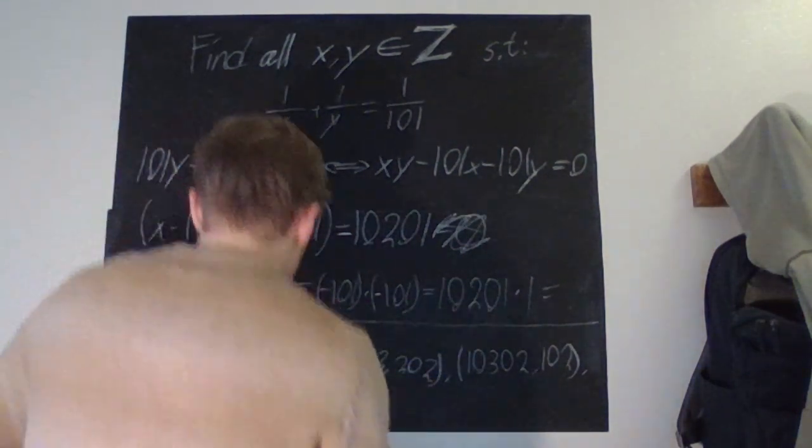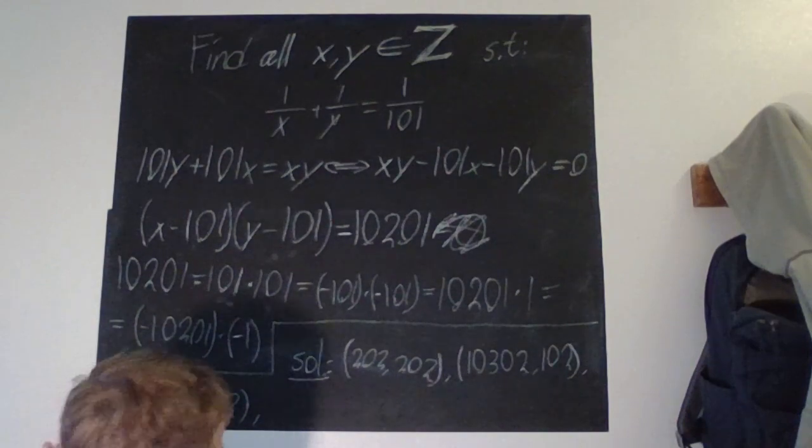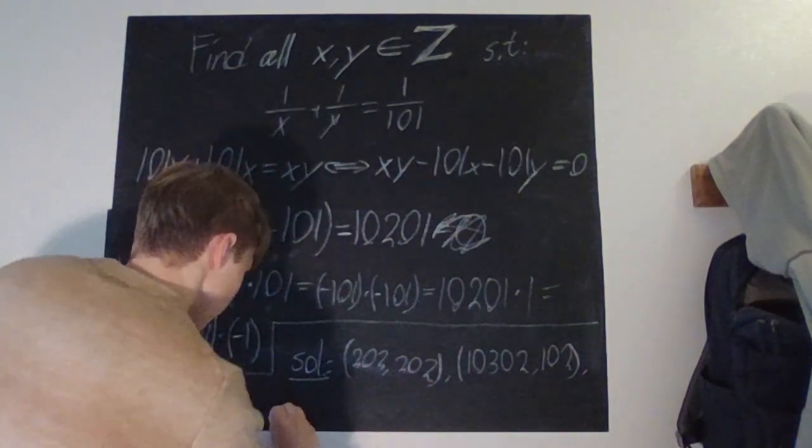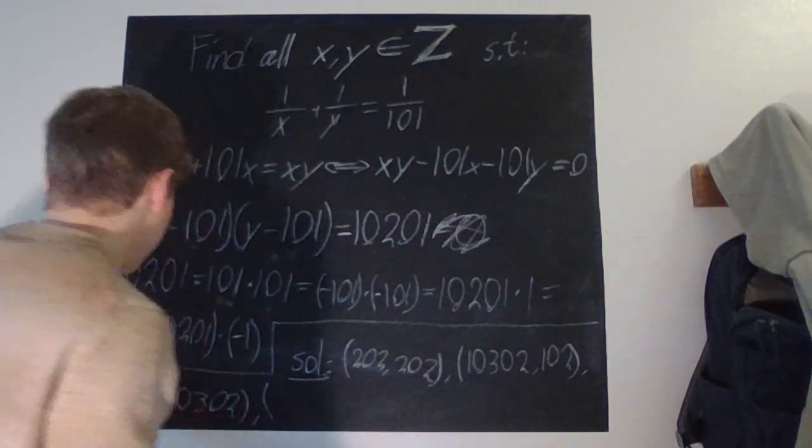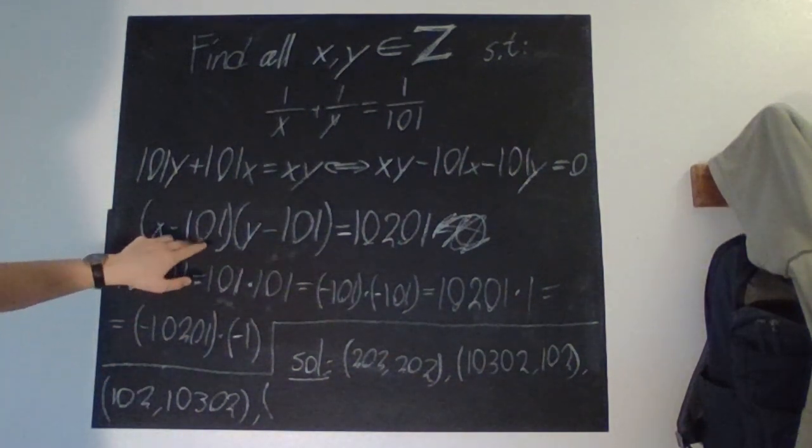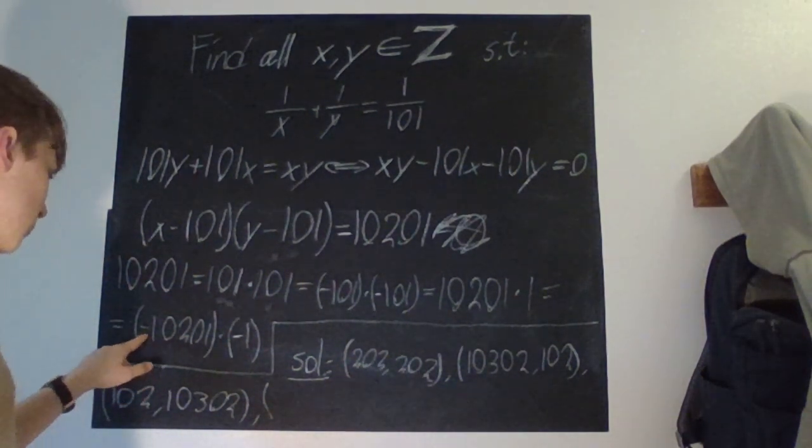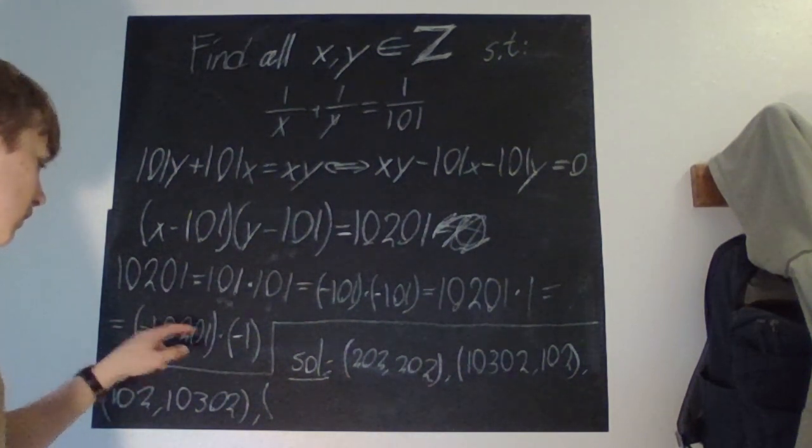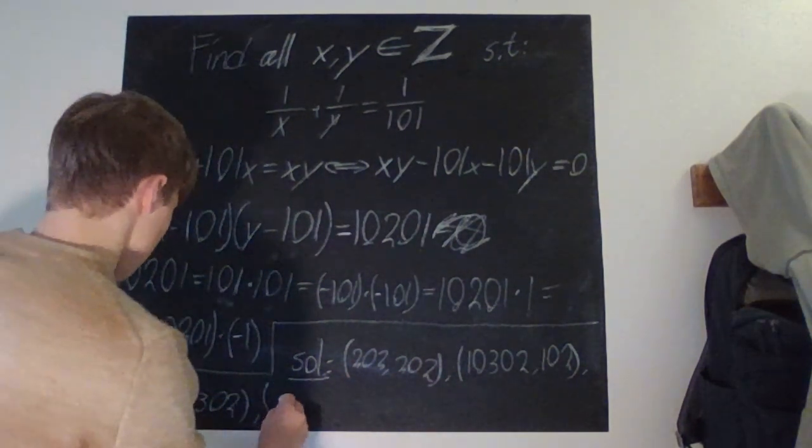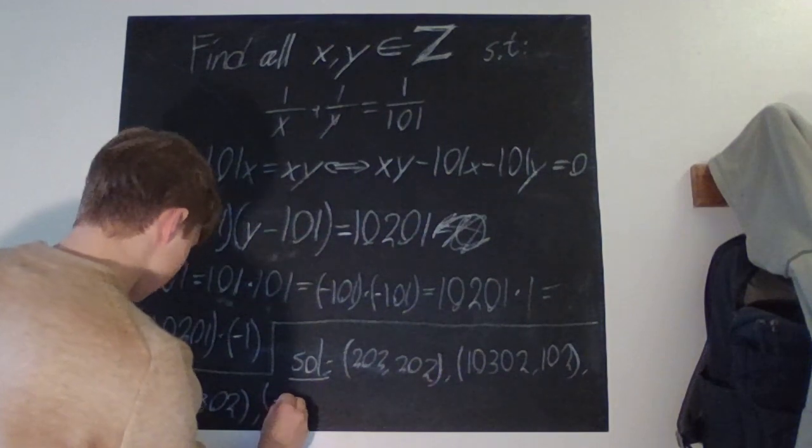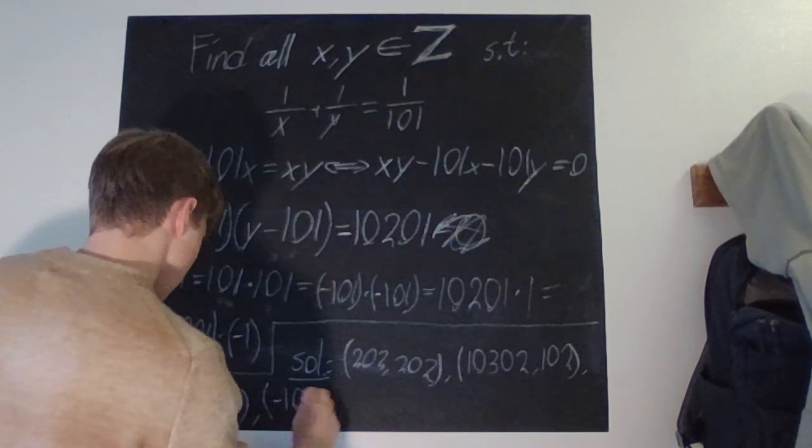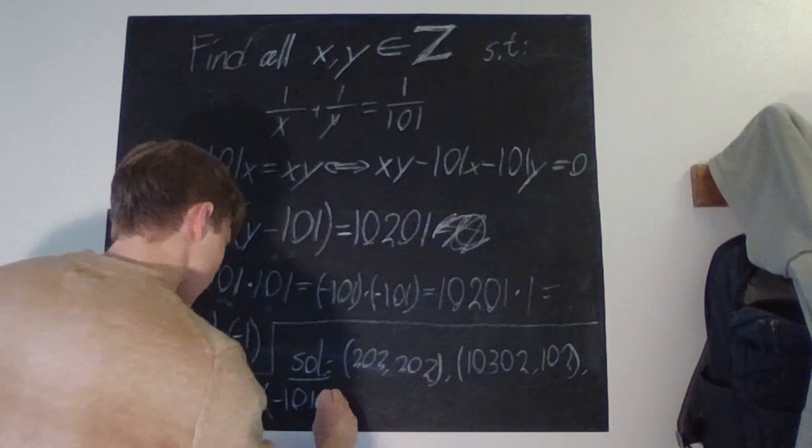And then we'll just do the same with this. If x - 101 is supposed to be equal to -10201, then we have the answer -10100.